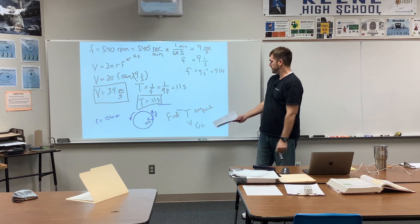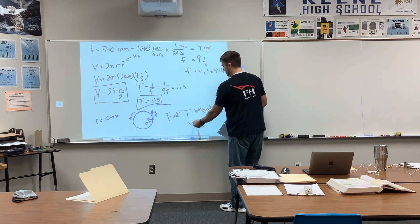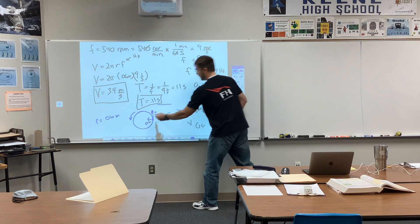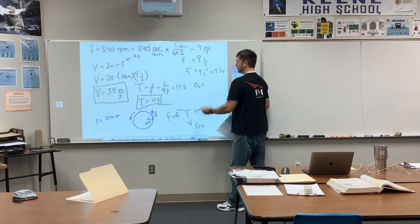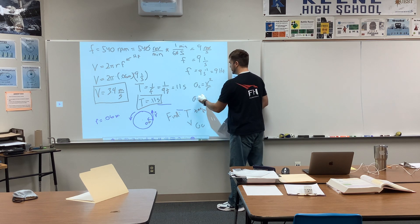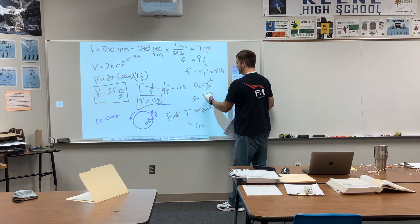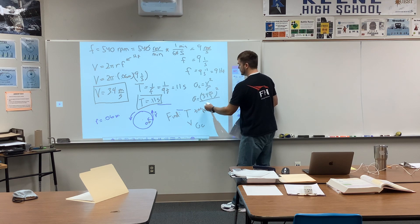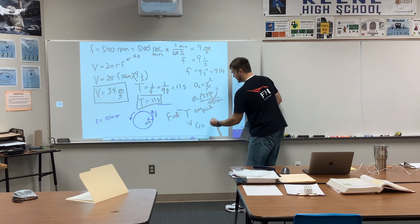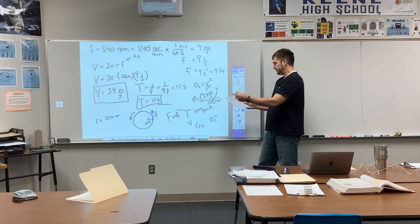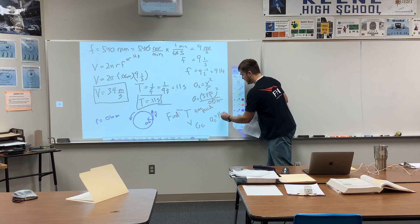Finally, the centripetal acceleration. The formula is a = v²/r. Take v = 3.4 meters per second, square it, and divide by r = 0.06 meters. The final answer is approximately 192, which I'll round to 190 meters per second squared.